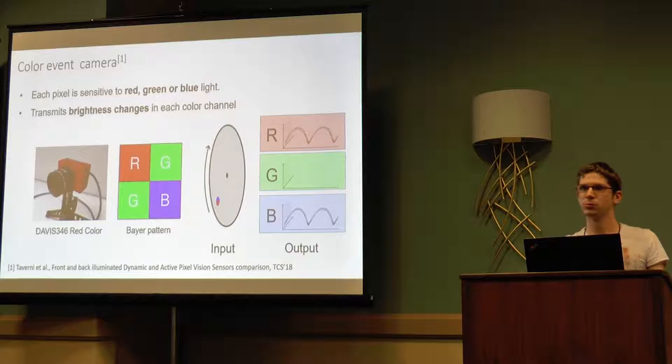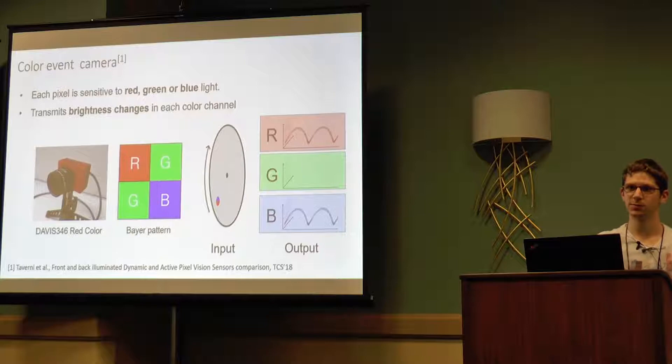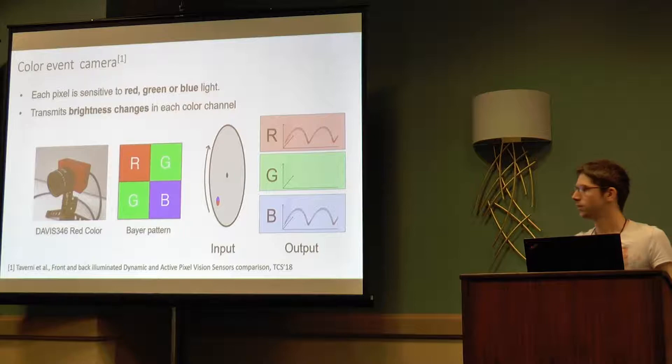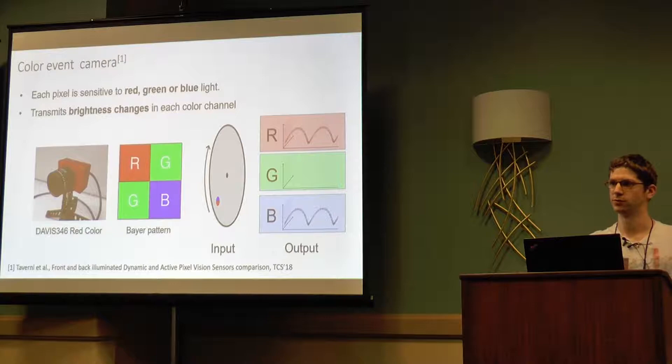First, what is a color event camera? All the works you've seen so far were using monochrome cameras, but recently another type of color event cameras has been introduced. The way they work is they have a filter array behind each pixel, which can be red, green or blue. Therefore the events you get now encode color information in three different channels.